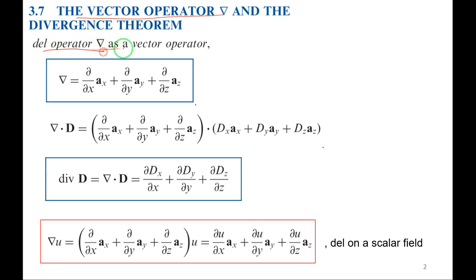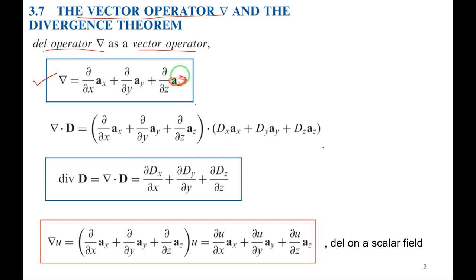We will define the del operator — it is a vector operator. You can observe that it has unit vectors Ax, Ay, and Az associated with it. So, del operator is (∂/∂x)Ax + (∂/∂y)Ay + (∂/∂z)Az. It is a vector.